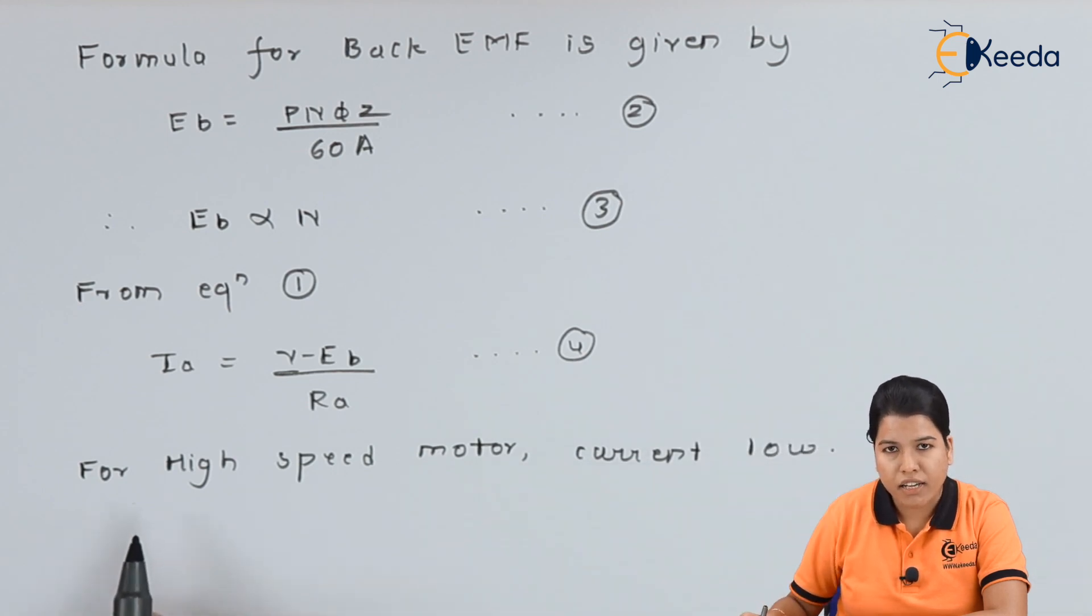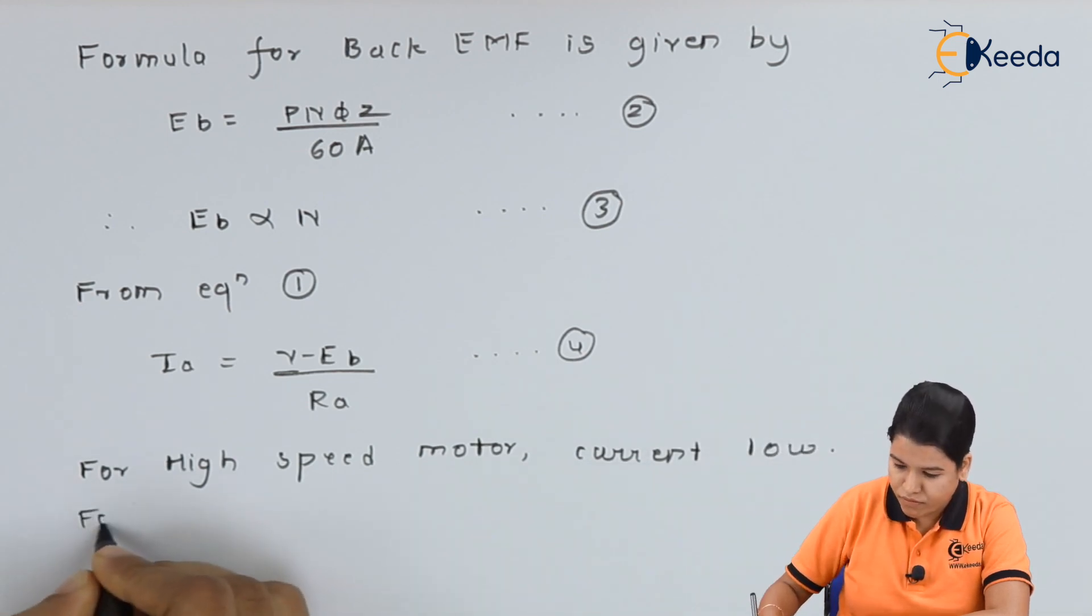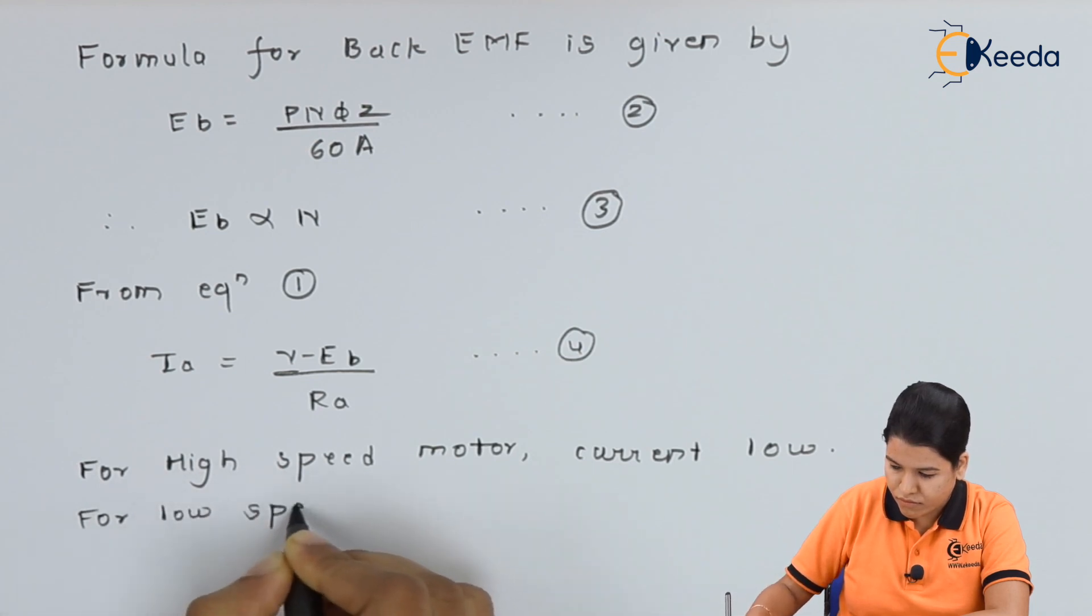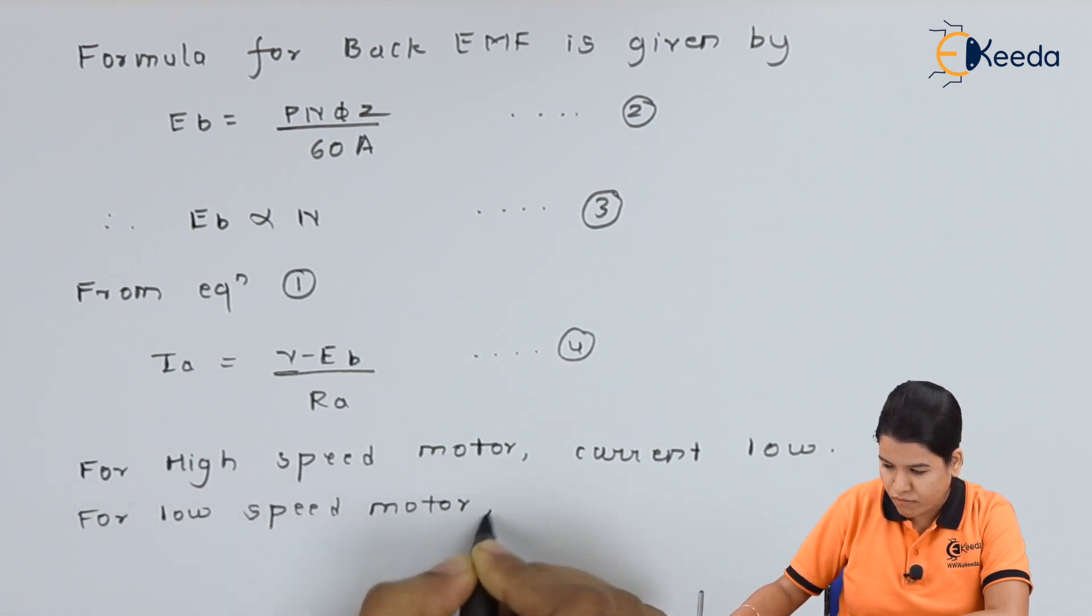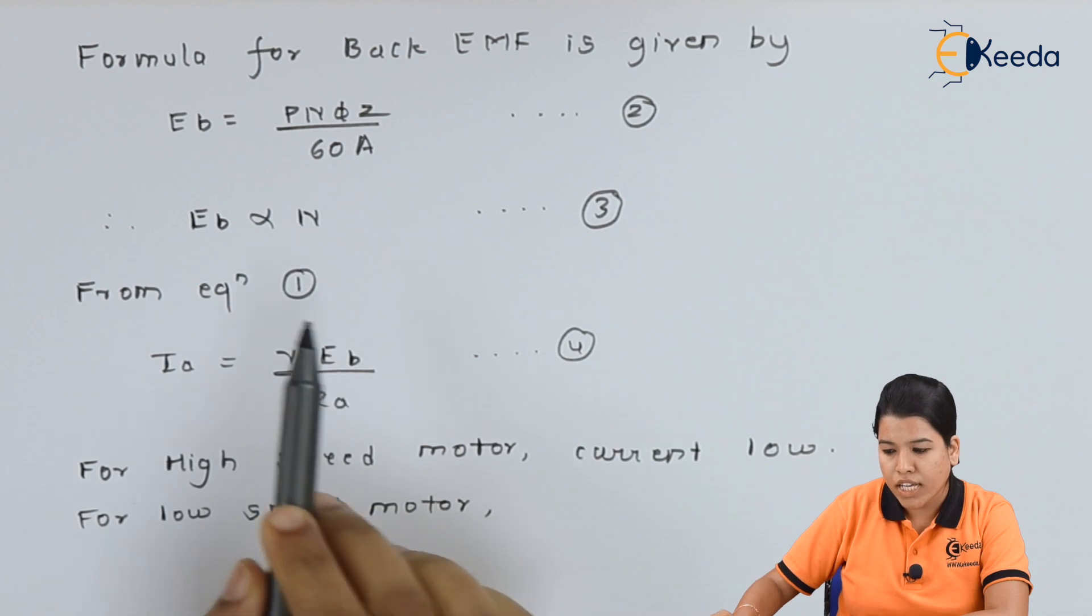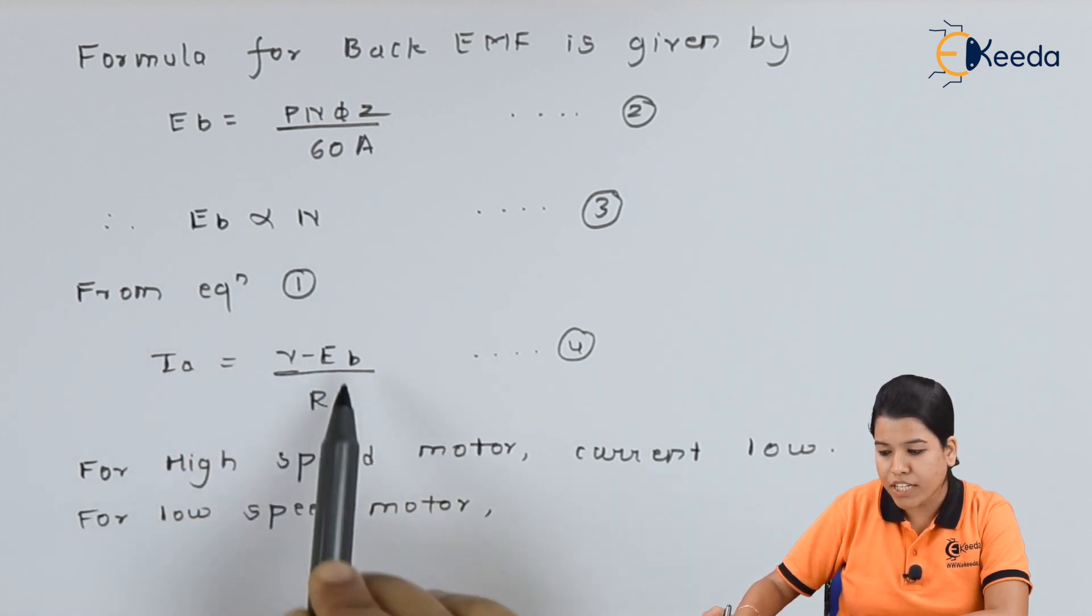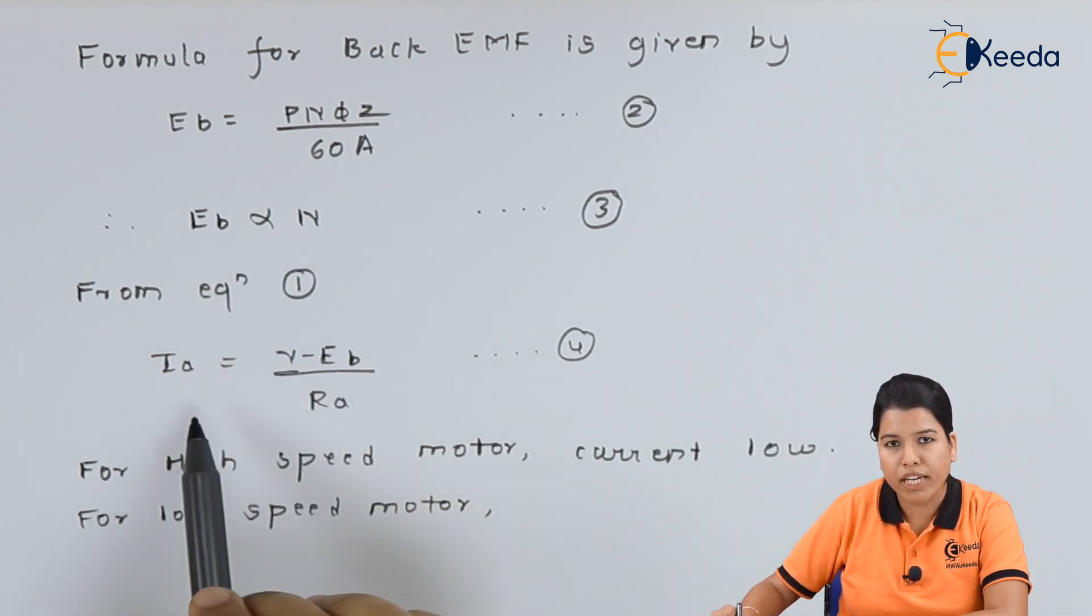Vice versa, if the speed is low, the back EMF will be low. Hence from this equation the value of current will be high.